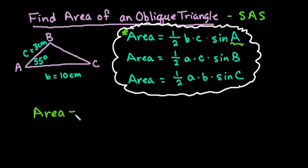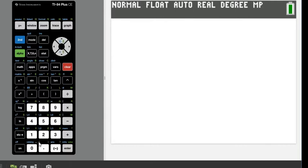So we would just say that area equals one-half of B which is 10 times C which is 3 times sine of the angle measure. You want to make sure that your calculator is in degrees for this, and then all you have to do is plug it into your calculator. So we would just do 0.5 times 10 times 3 times sine 55.